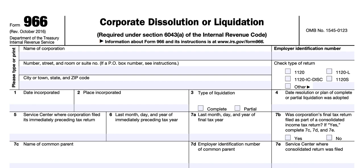This document is a one-page tax form and contains instructions on both the first and second pages. To complete this form, start at the top with the name of the corporation and the corporation's employer identification number, followed by street address or PO box, street and room if applicable, city, state, and zip code.